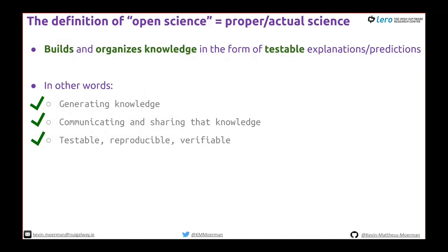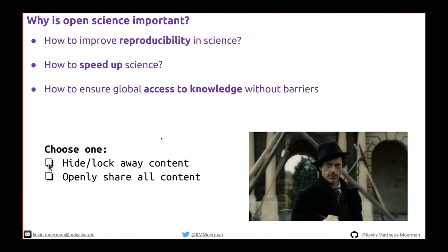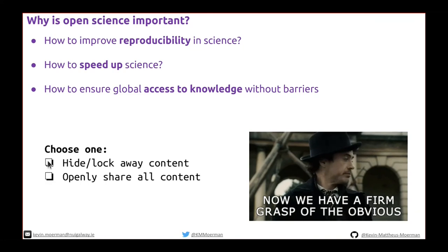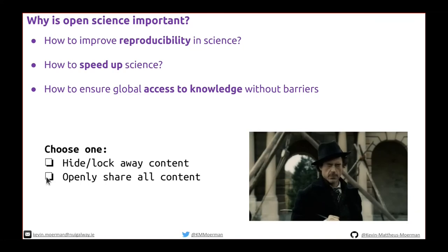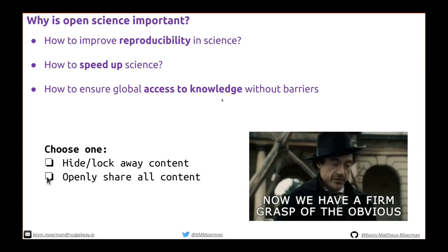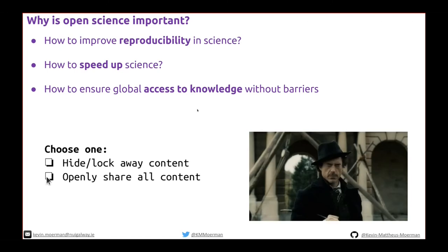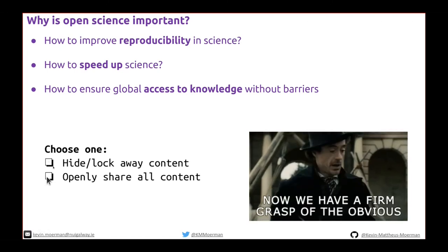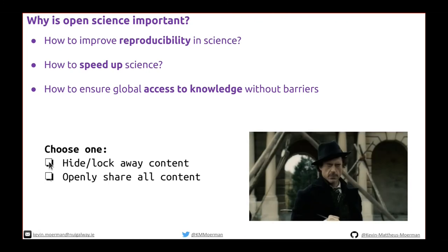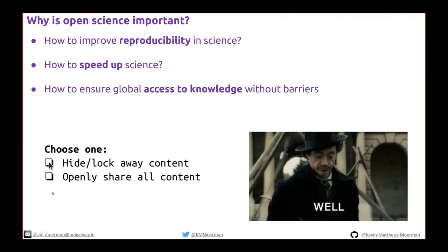So how can we improve reproducibility in science, speed it up, and ensure global access to knowledge without barriers? Choose one: hide or lock away content, or openly share all content. I think it's a no-brainer — we should openly share all content.